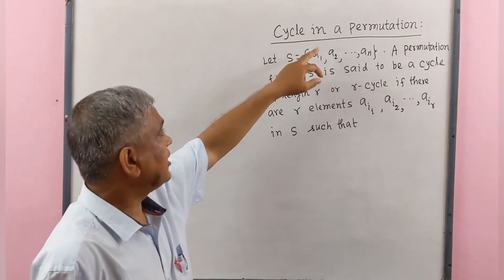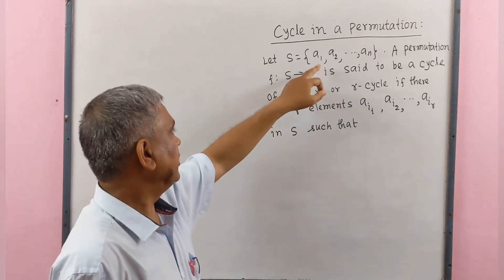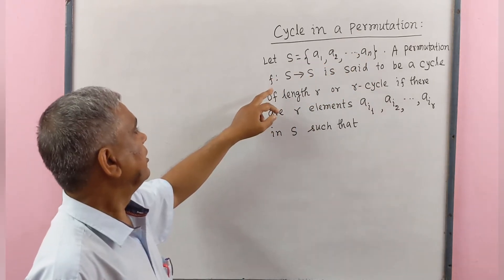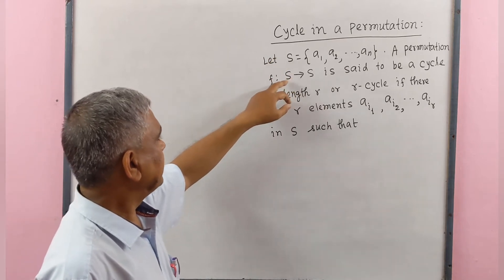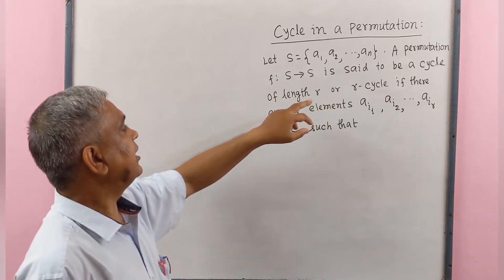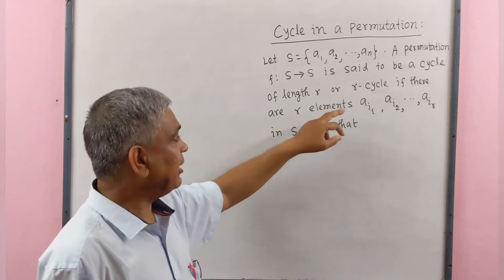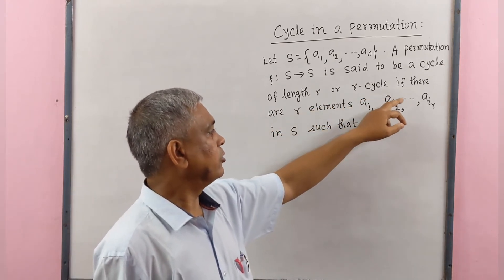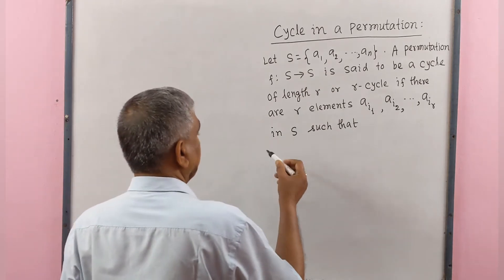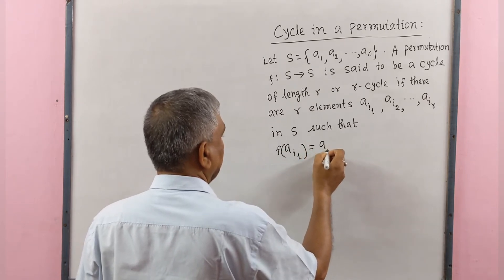Now we define a cycle in a permutation. Let S be a finite set containing elements a1, a2, ..., a. A permutation F defined on the set S onto the set S is said to be a cycle of length R, or R-cycle, if there are R elements a_i1, a_i2, ..., a_ir in S such that F(a_i1) = a_i2.